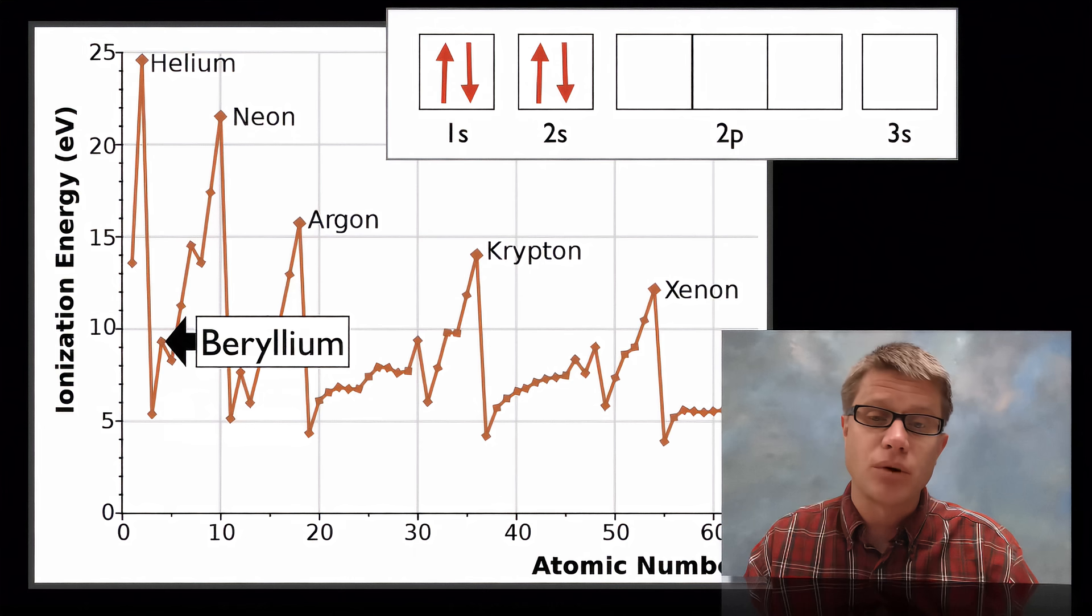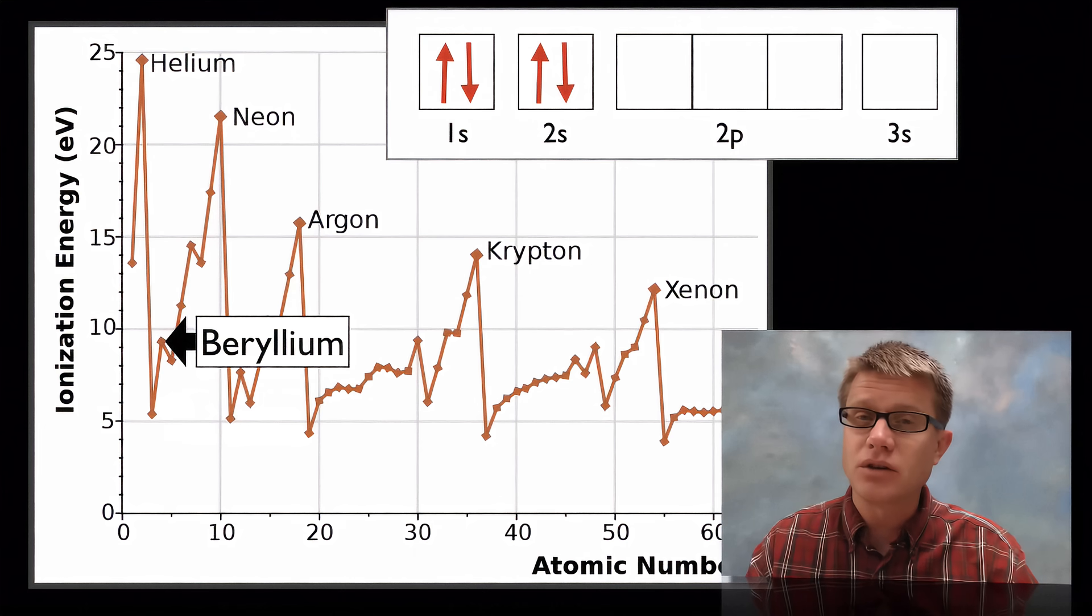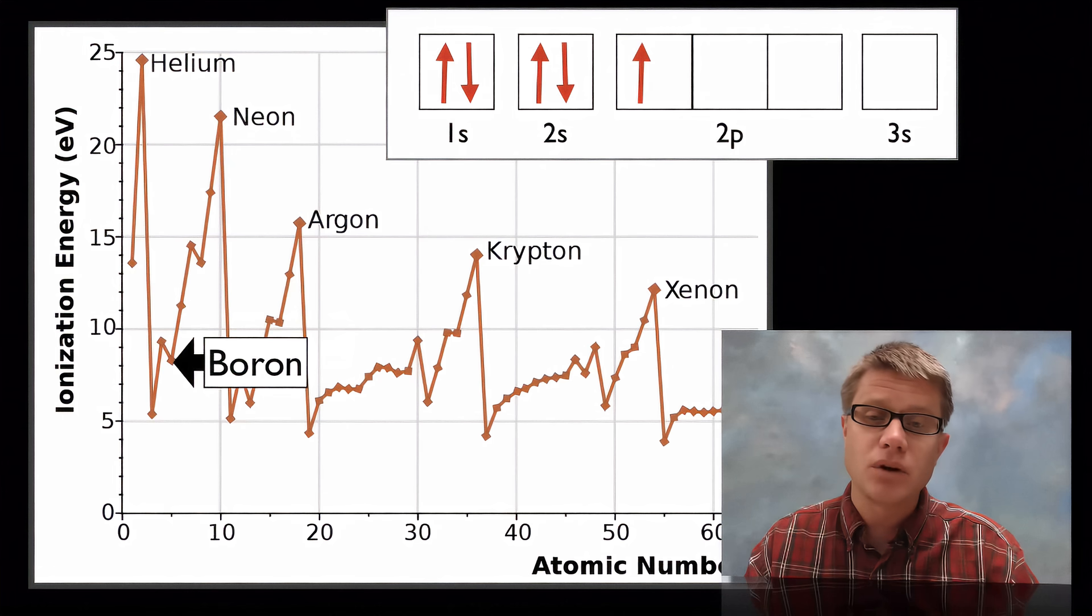Let's watch what happens with beryllium. Well that kind of makes sense. We're increasing the protons and so that should go up. But then what happens with the next one? Well when we go to boron what's happening is it's actually going into a new orbital. And so it's going into an orbital of the second subshell. And so if we didn't have these orbitals what would happen is it would just be a consistent all the way up to neon.